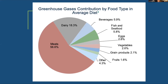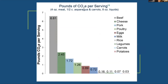Ruminants eructate — belch methane — and consume large amounts of feed and water. Chicken production leads to fewer emissions than mammals. Meat production overall is the single most important source of methane, which has a relatively high warming potential but a short half-life in the environment compared to CO2. Another graph shows the various pounds of CO2 per serving of different food items.